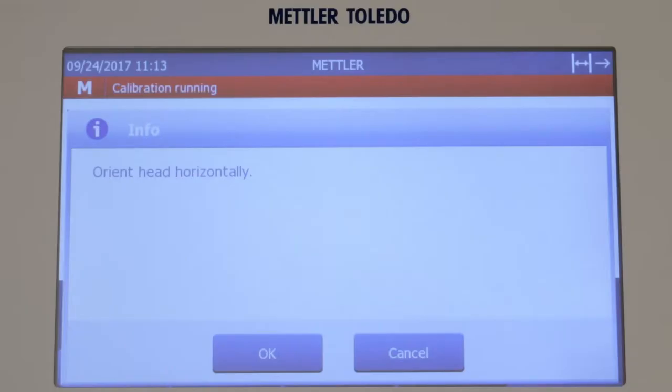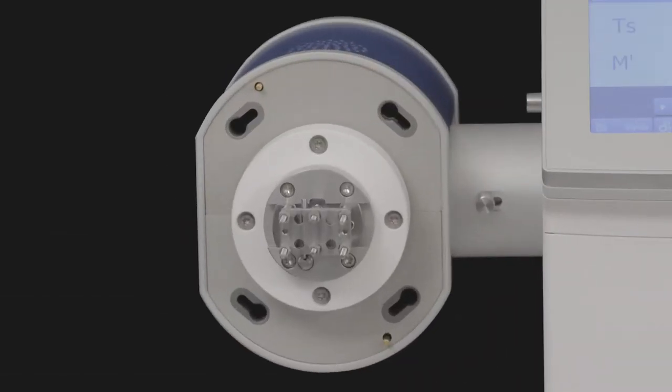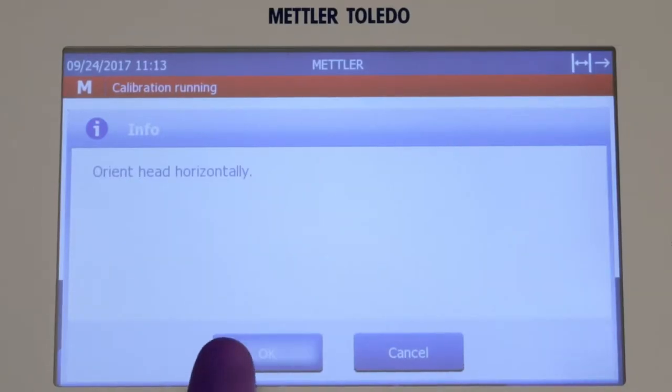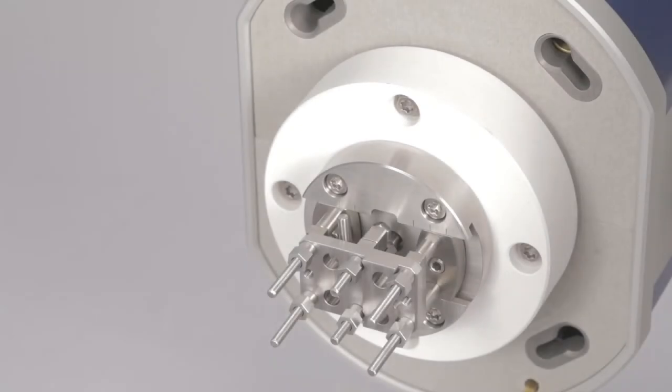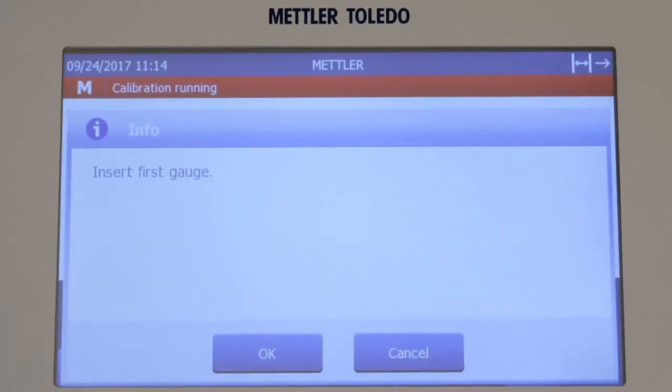The System Info dialog appears, reminding you that the measuring head must be oriented horizontally. Tap OK. An instruction appears, requesting you to fit the alignment insert and tighten the nuts with the torque wrench. Tap OK to confirm.